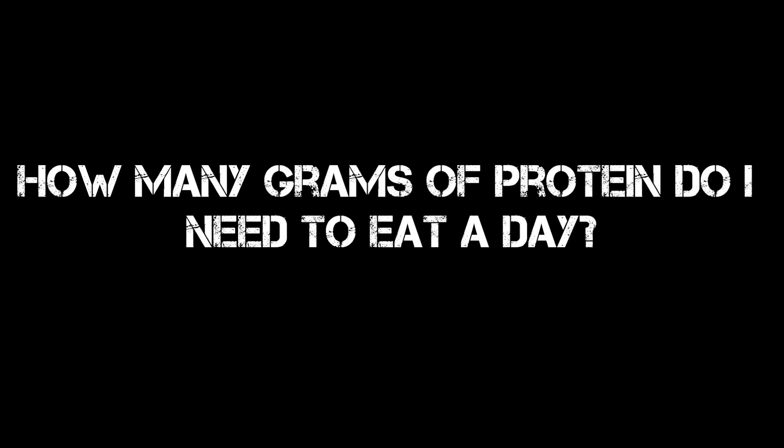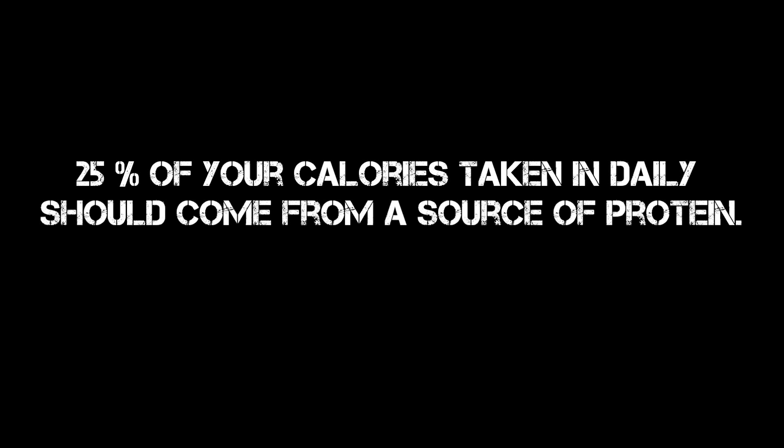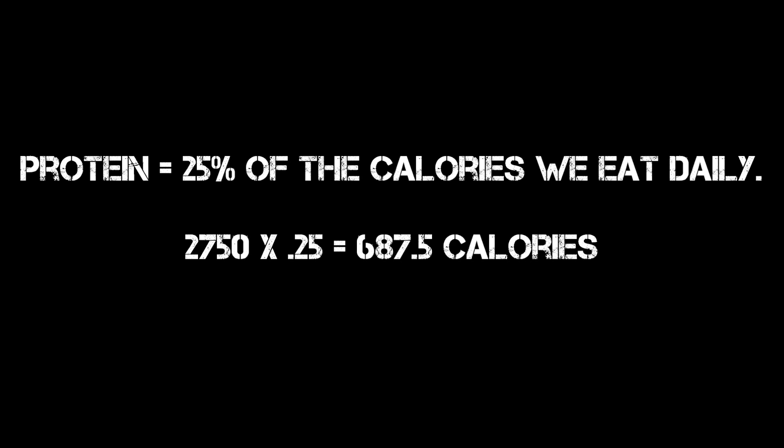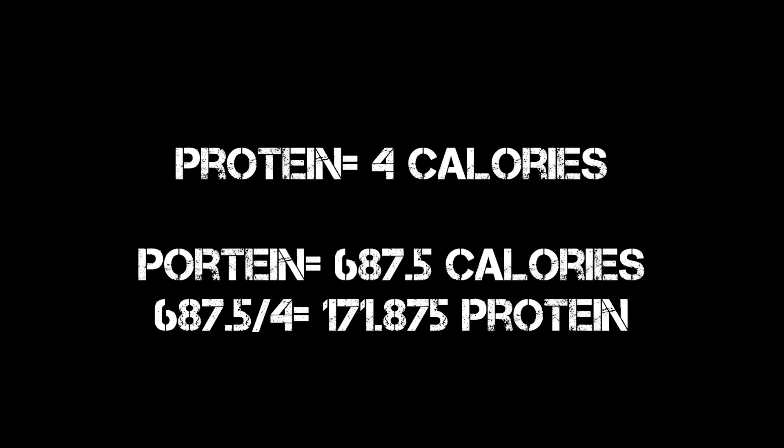Let's break it down into further detail. How many grams of protein do you need to eat daily? 25% of your calories taken in daily should come from a source of protein. You just need to grab your calculator and take that number — maintenance plus the 500. For example, we had 2,750 calories for someone at 150 pounds. We're going to multiply that by 0.25 to give us 25%, which gives us 687.5 calories. There are 4 calories in every gram of protein, so we divide that by 4, giving us 171.875 — I would just round that off to 170 grams of protein.